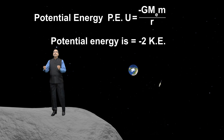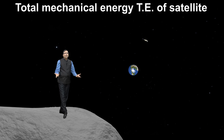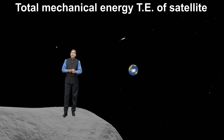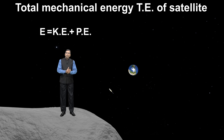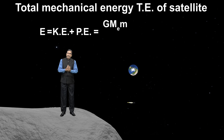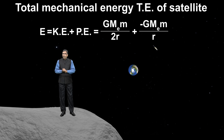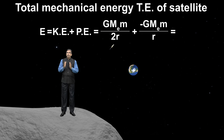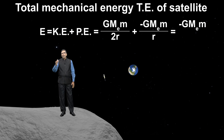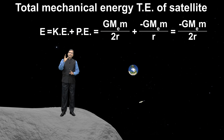We have given the satellite's kinetic energy and the satellite's potential energy. If someone asks about the satellite's total energy, the total mechanical energy E is equal to kinetic energy plus potential energy. Putting the value of kinetic energy: G Mₑ m upon 2r, plus potential energy which is minus G Mₑ m upon r. Adding these two terms, the total energy is equal to minus G Mₑ m upon 2r, where r is small r.